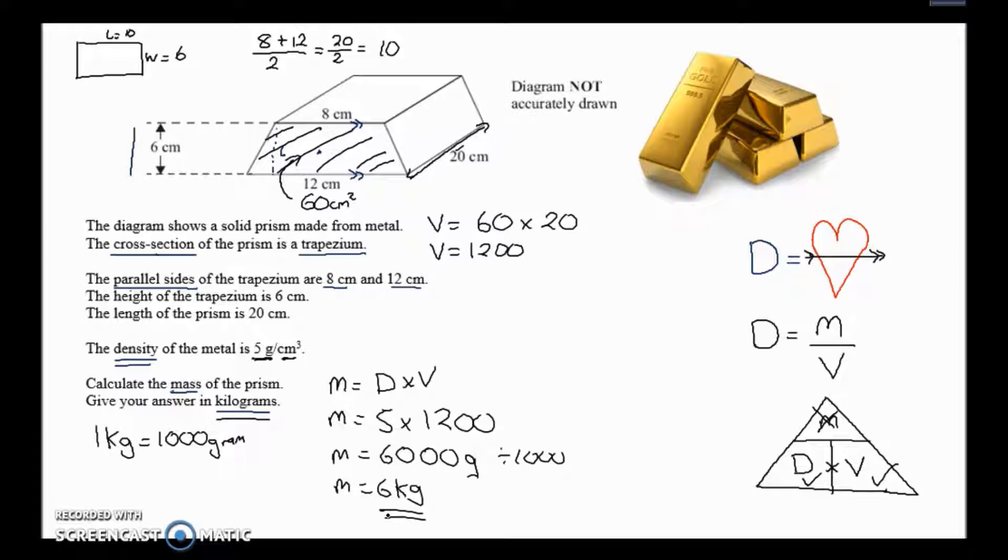Lots to do in that question. Make sure you revise the formulas for area of the trapezium and also how to work out the volume of prisms by working out the area of the front times the length of the shape. And remember this density heart thing - that will help that stick in your mind for the exam.